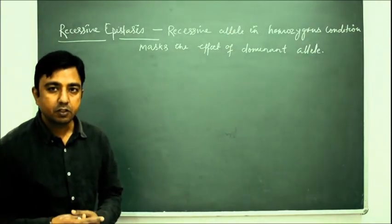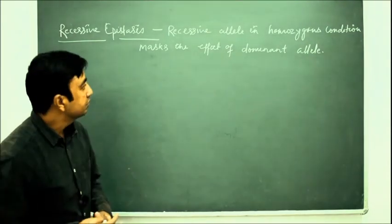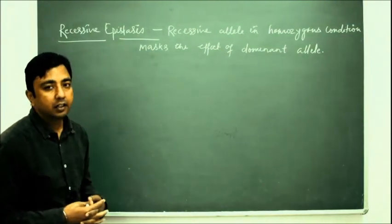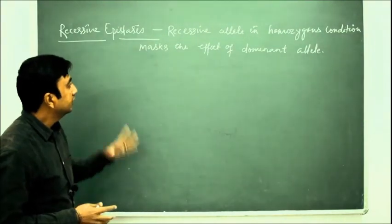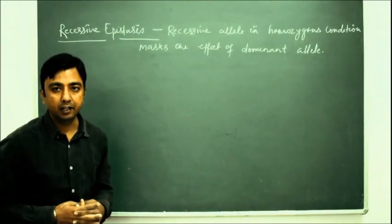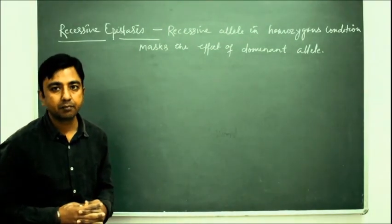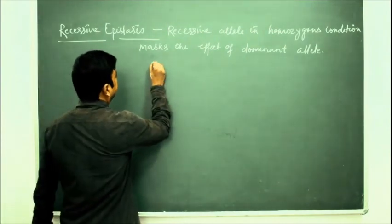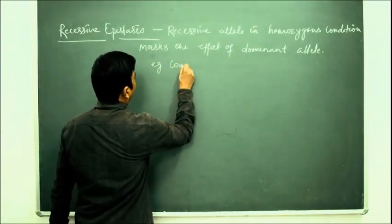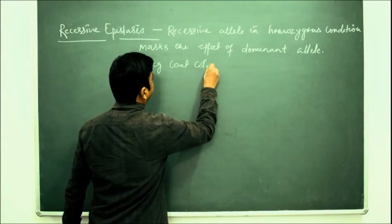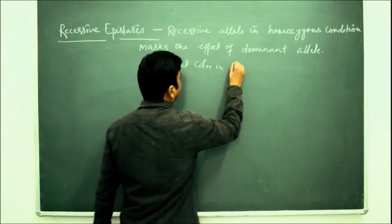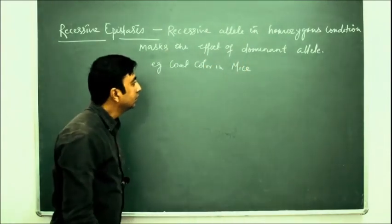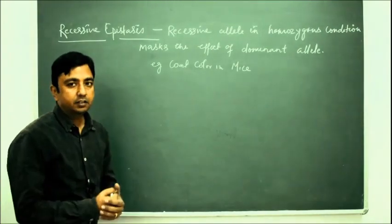In the case of recessive epistasis, it is the recessive allele in homozygous condition that masks the effect of the dominant allele. An example of this is coat color in mice. To understand this concept,